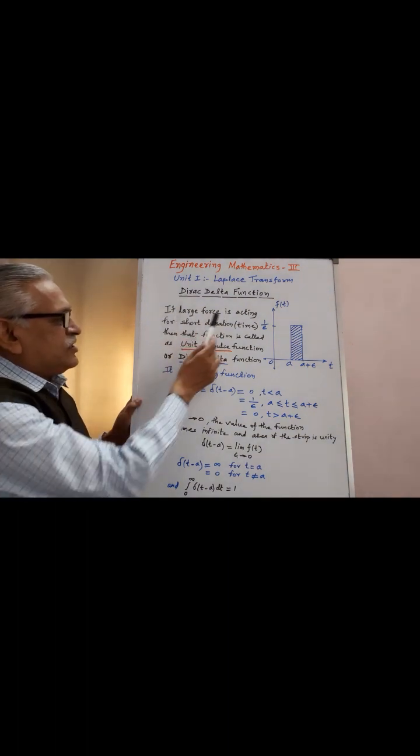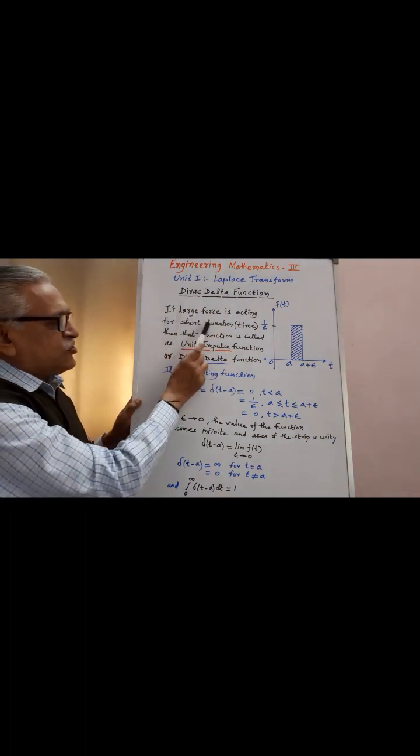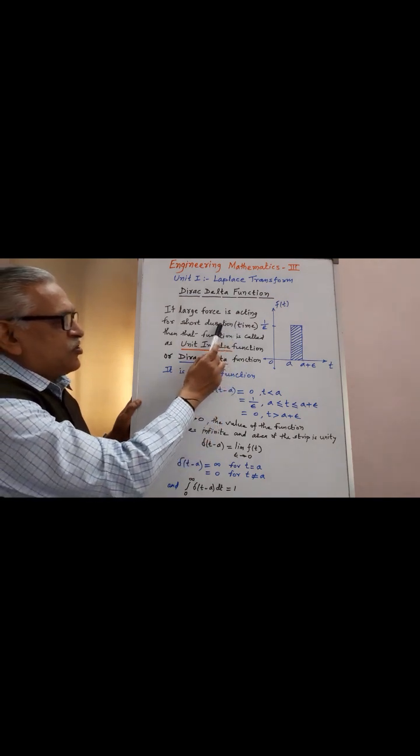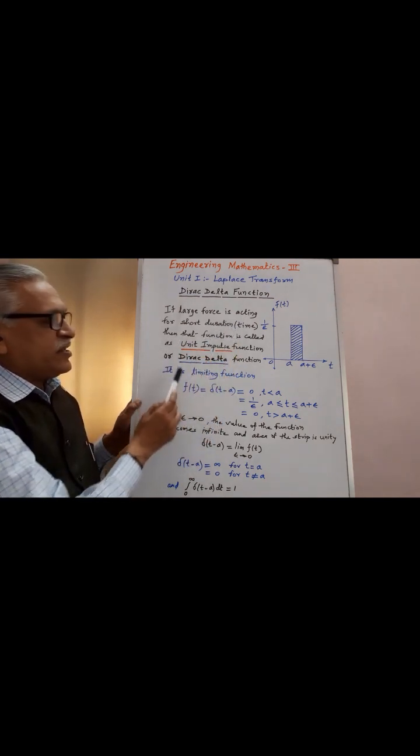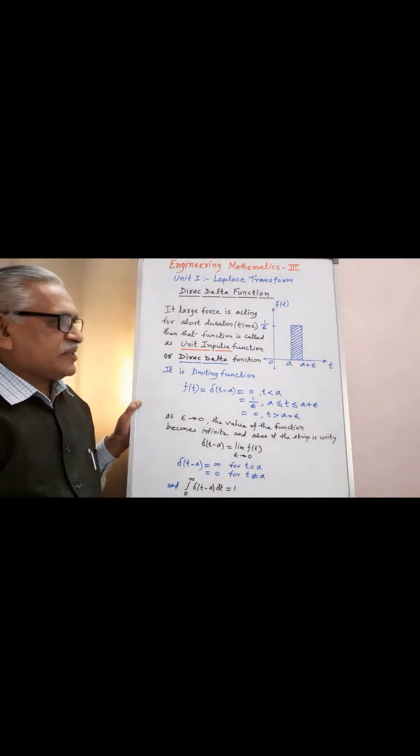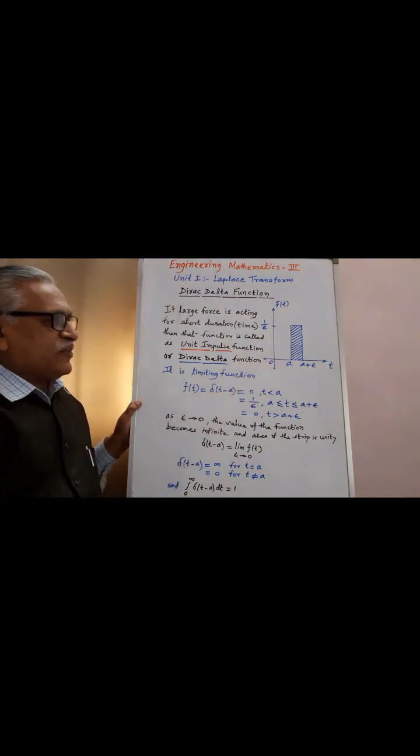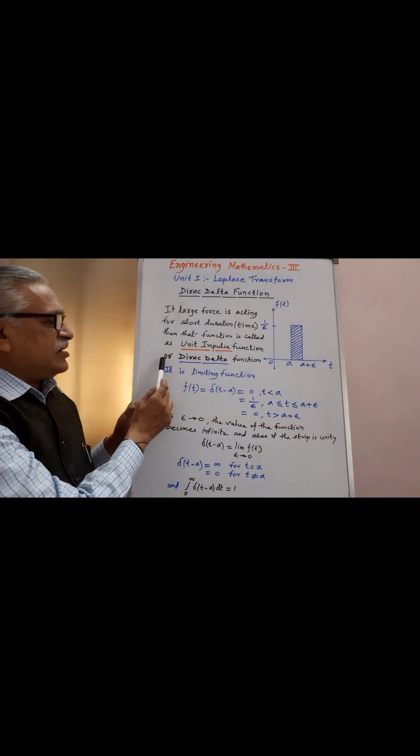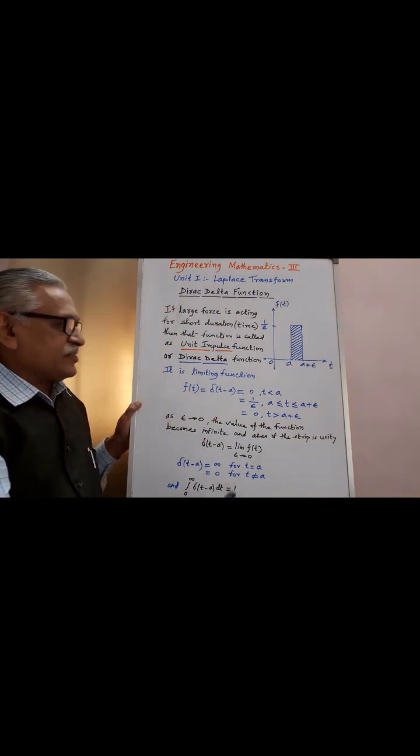If large force is acting for short duration or short time, then that function is called as unit impulse function. This is called as unit impulse function or another name for that is Dirac delta function.